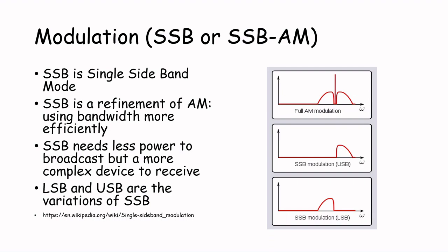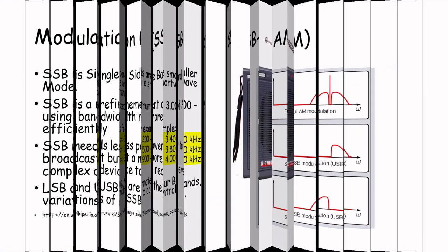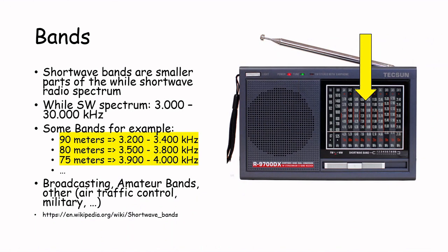And now let's talk about the bands. This is easy. The shortwave spectrum is between 3 and 30 MHz. Parts of this spectrum are called bands. For example, if you hear about the 80 meters amateur band, it only refers to frequencies between 3500 and 3800 kHz.